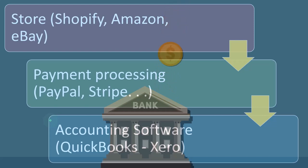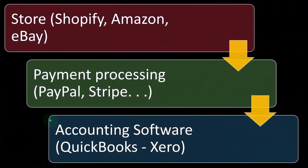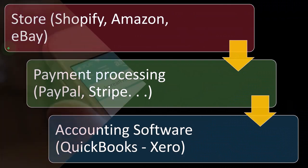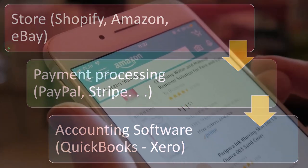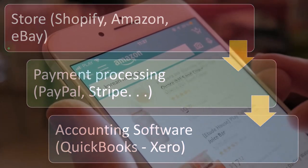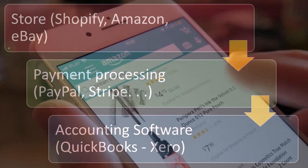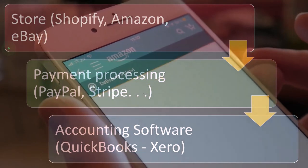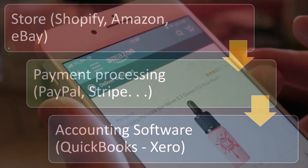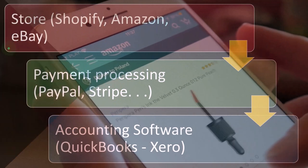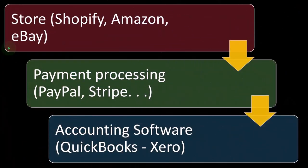Another option is to connect the accounting software directly to Shopify, Amazon, or eBay using either third-party applications or possibly QuickBooks Online, which has some very good integrations. But you've got to be careful about which software you're going to use.